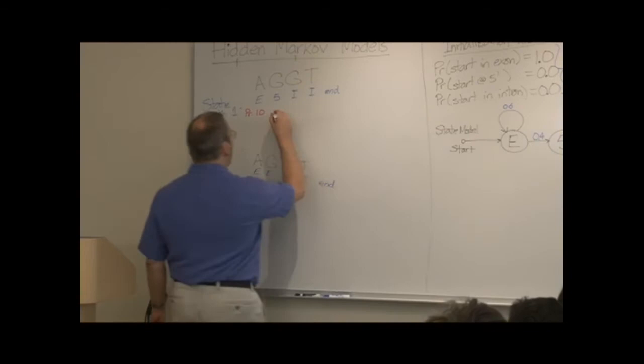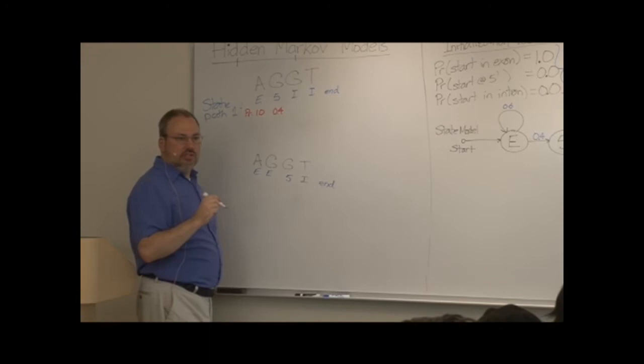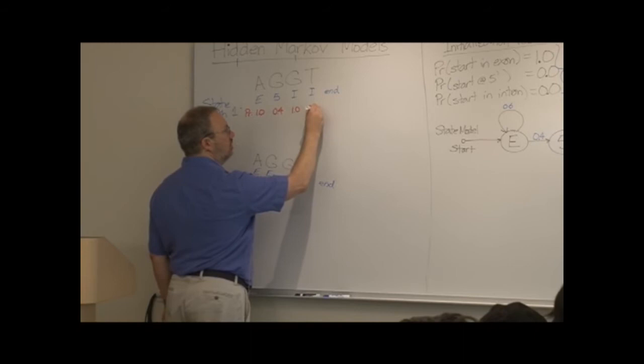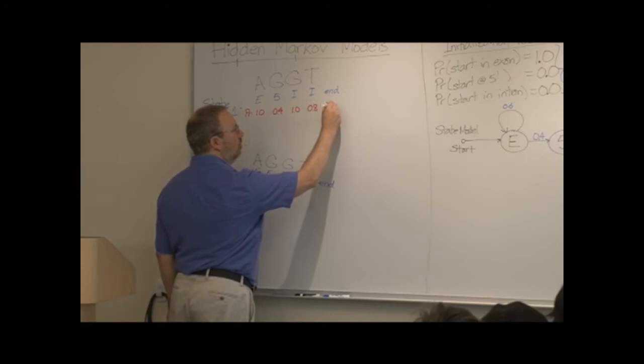What's the probability that we've gone directly from an exon to a five prime splice site at the next spot? Point four. So we can fill in the corresponding probabilities for all of these. Five prime to an intron, probability is one. Intron to intron, point eight. And intron to end, point two.